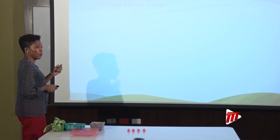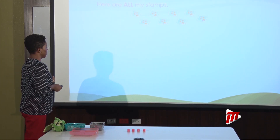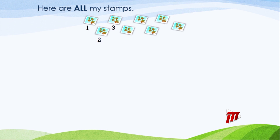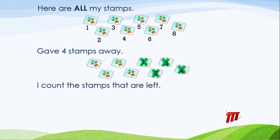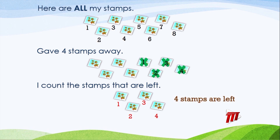Let's go to the screen. Here are all my stamps — one, two, three, four, five, six, seven, eight. She gave away four — one, two, three, four. I count the stamps that are left — one, two, three, four. Four stamps are left. Eight take away four equals four.